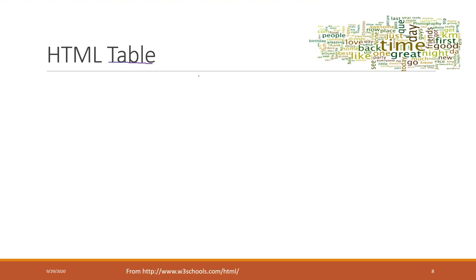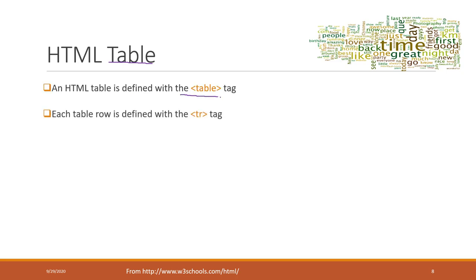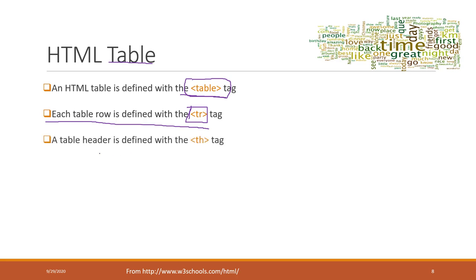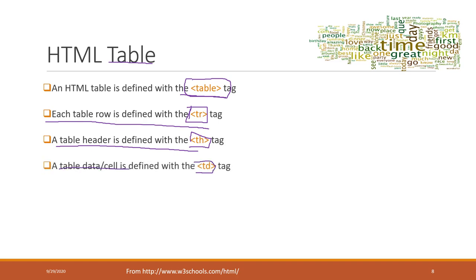We can also create and display a table in HTML — not a relational database table, but a visual table showing information. To define a table, use the table tag with both a starting and ending tag. Each row is defined with the TR tag (table row). The header cells within a row use the TH tag, and data cells use the TD tag.